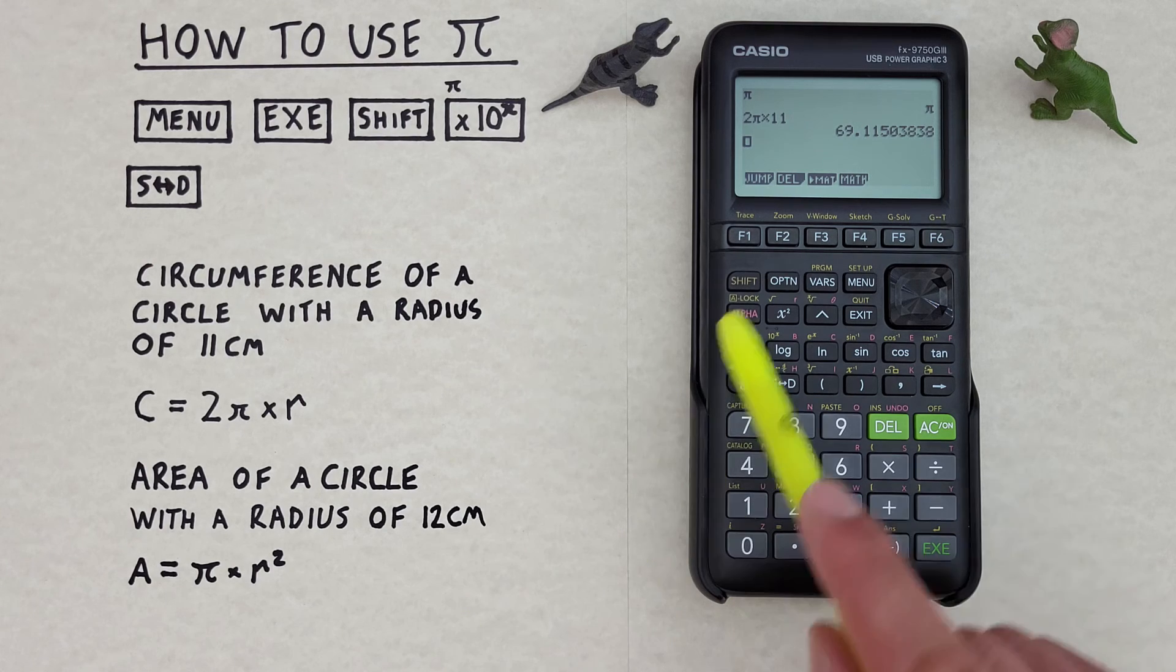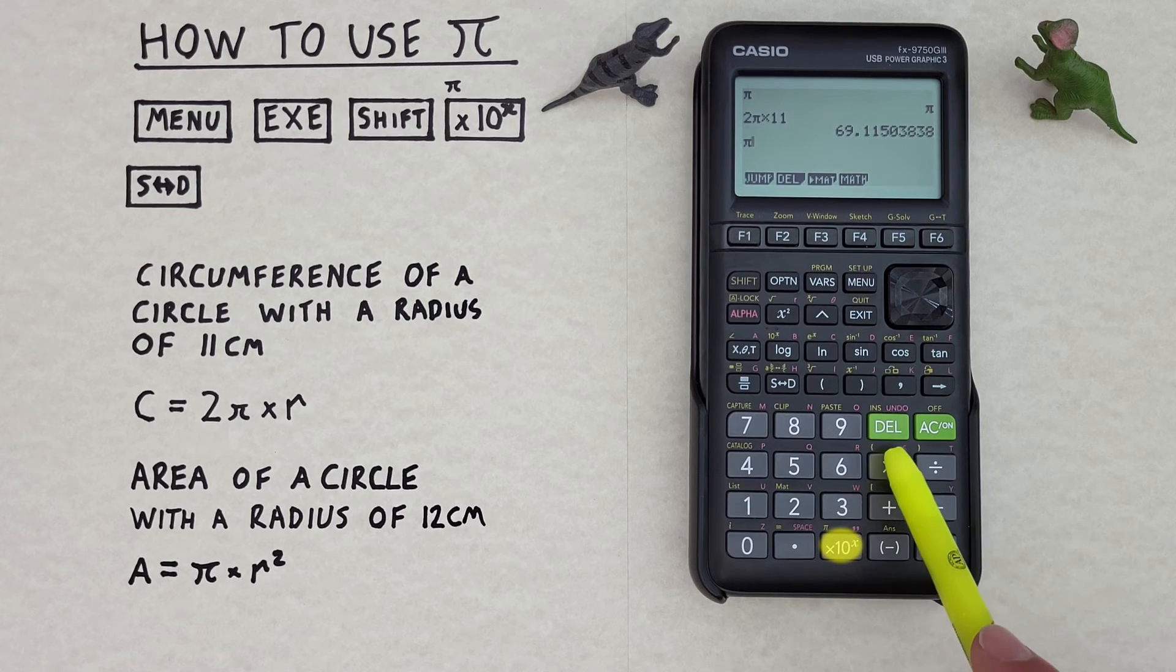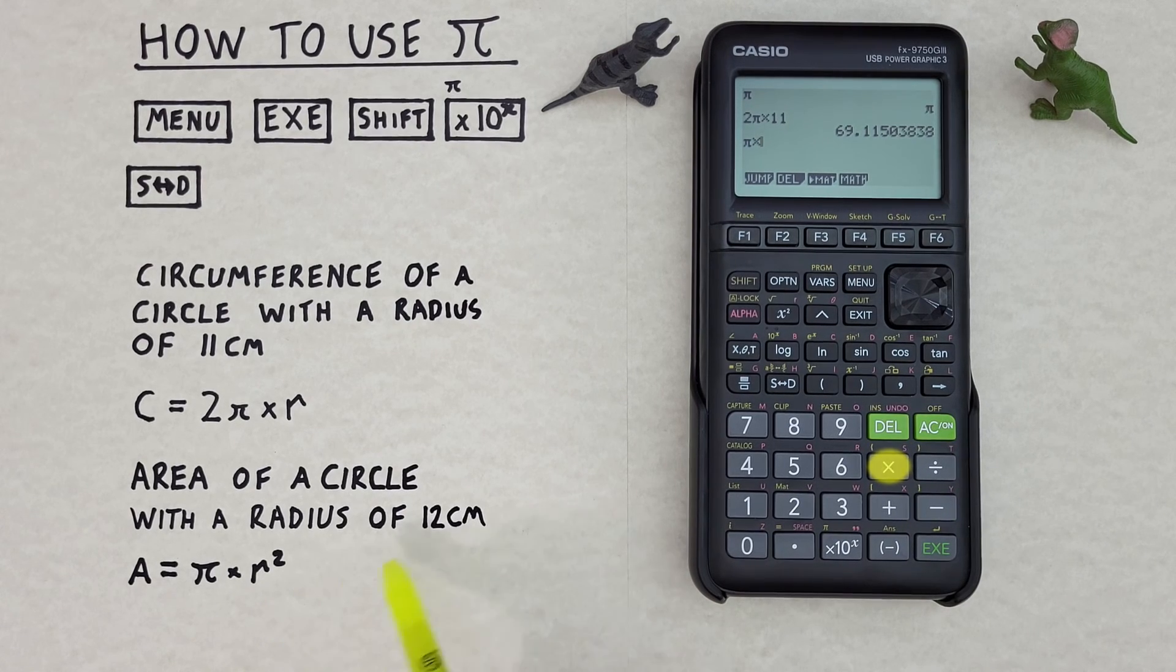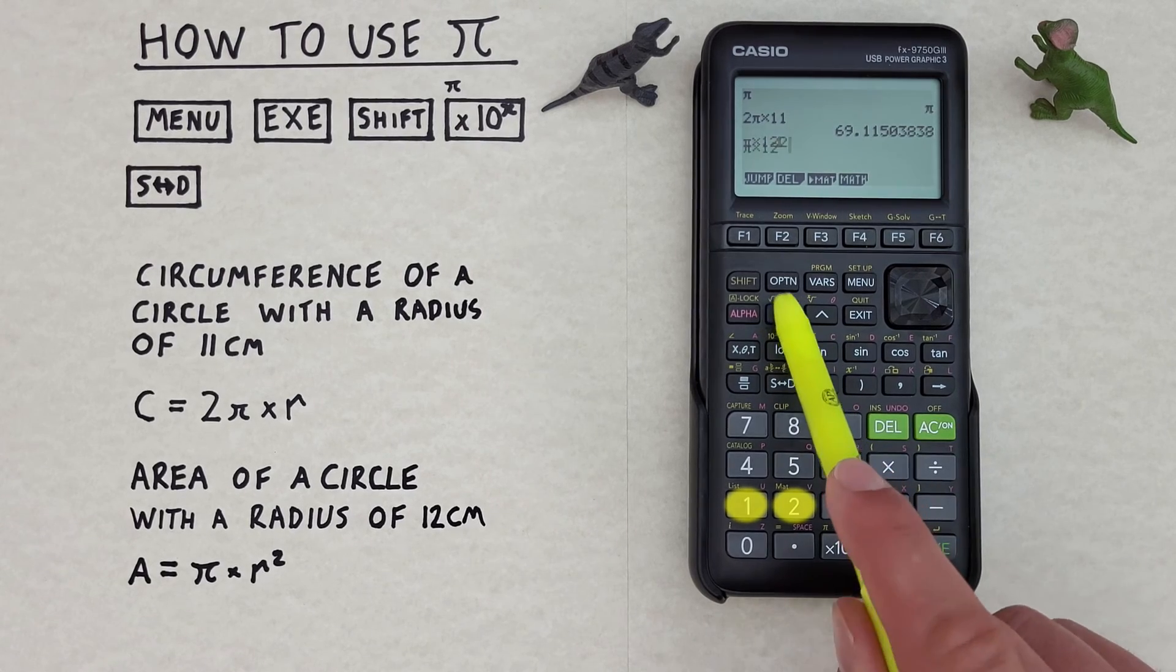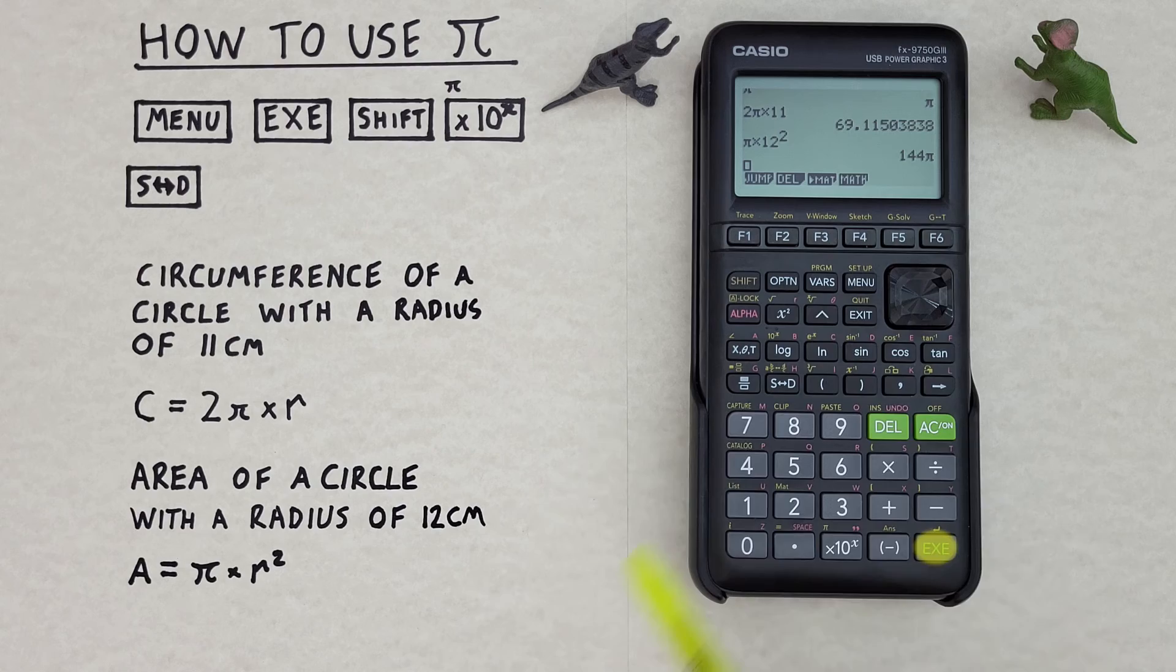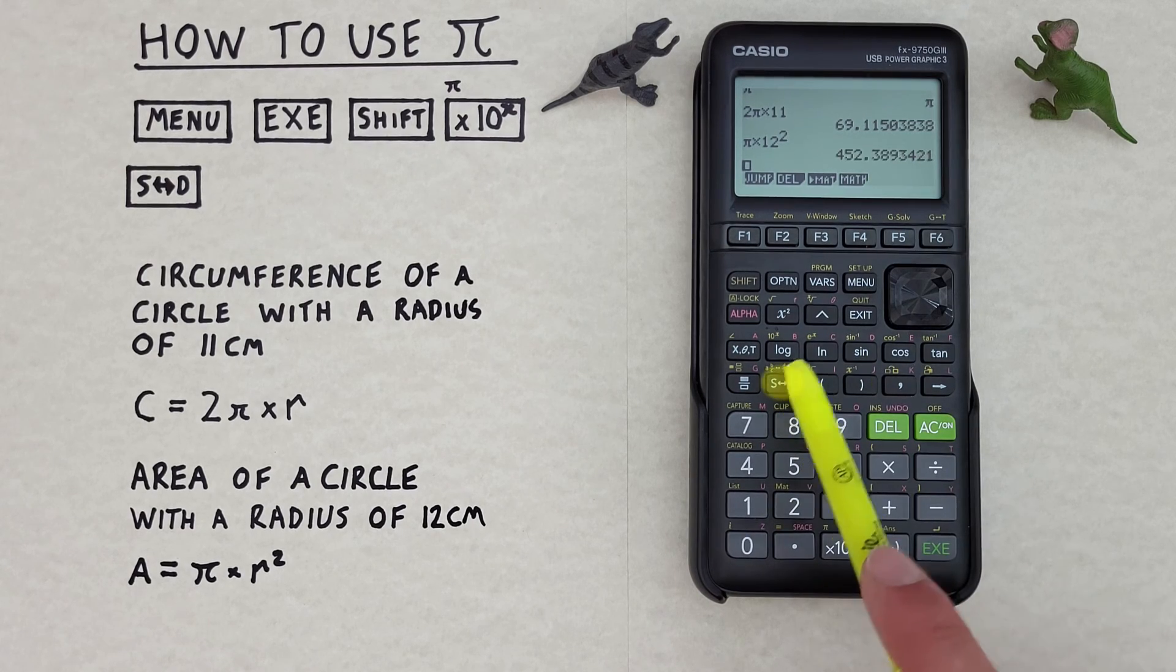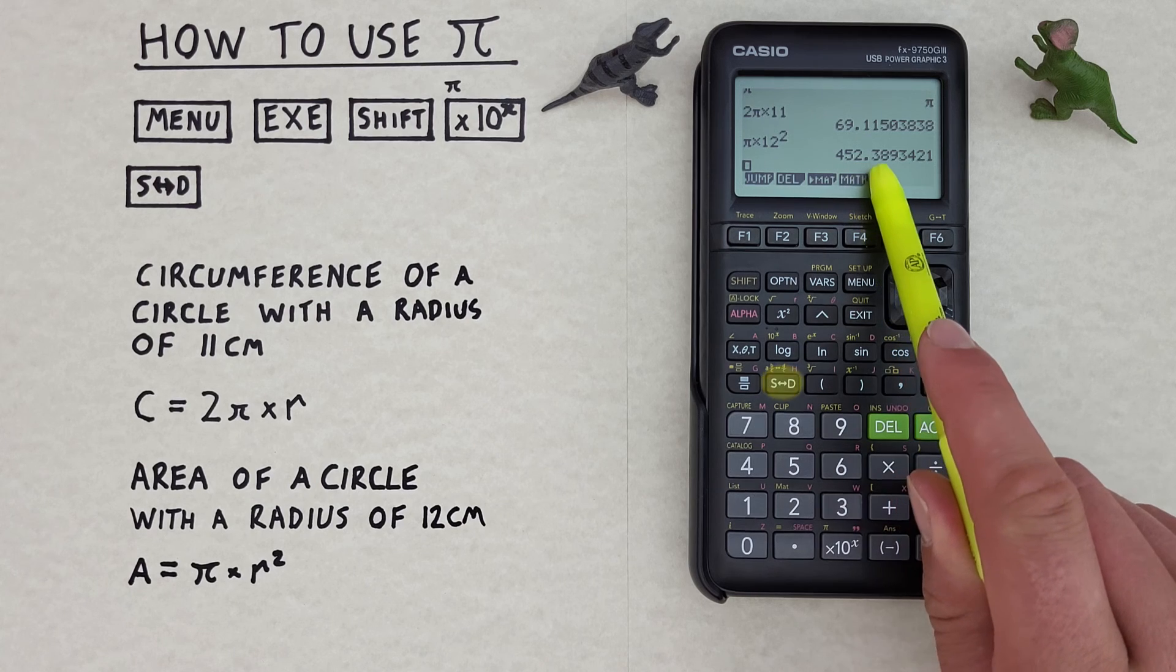So to solve this, we can first put our Pi on the screen. And then go times our radius, which was 12 in this question. And then square that. And press execute. And we see we get 144 Pi, which we can convert to 452.389 etc.